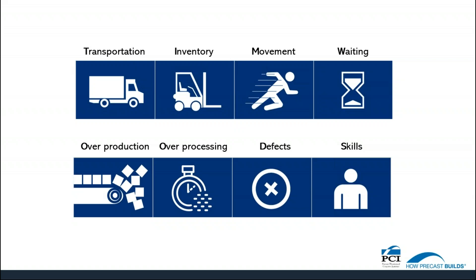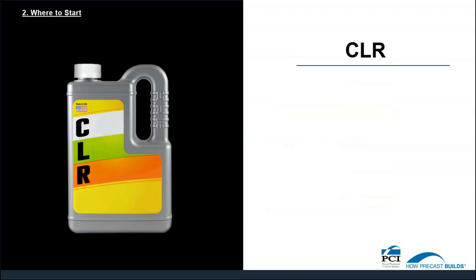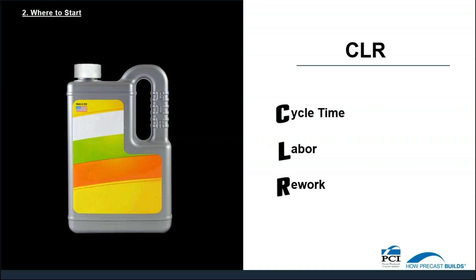By coincidence, there is a product out there called CLR — a product that most of us are familiar with. This product has the same acronym: C for cycle time, L for labour, and R for rework. This is a very simple acronym that highlights the three main elements to assess when looking for value leaks. Whether operations are located in the US, Canada, Europe, Asia — all around the world — these three elements are some of the biggest areas that contribute to productivity leaks.